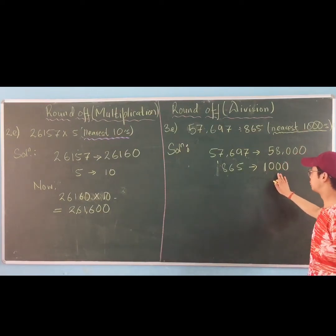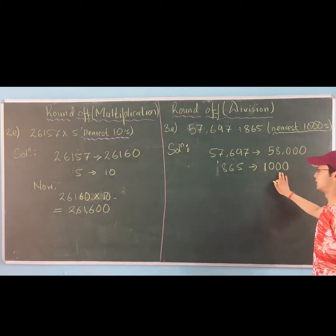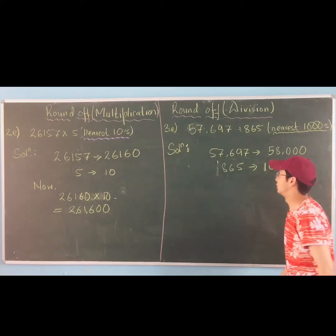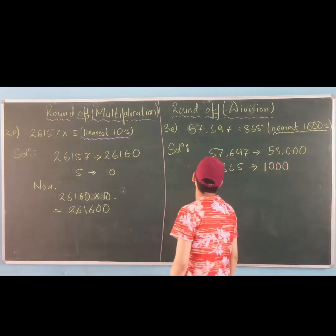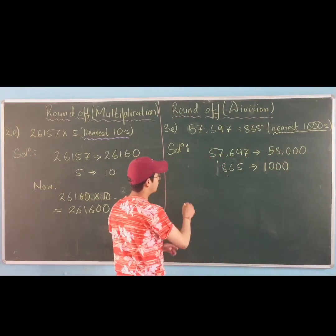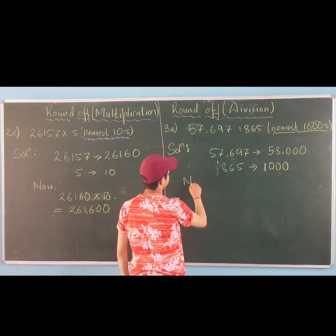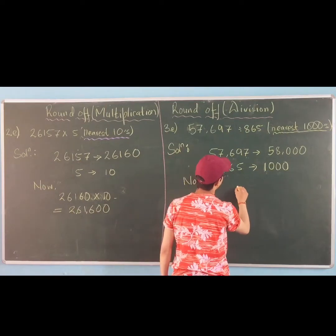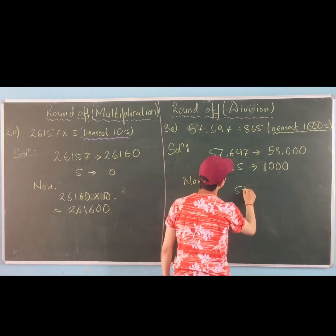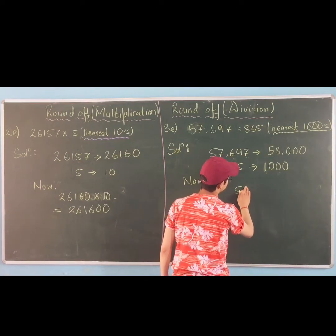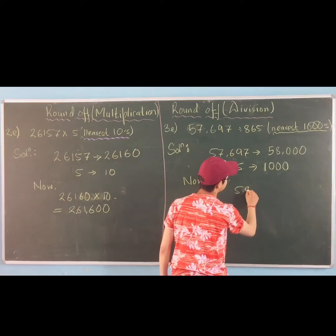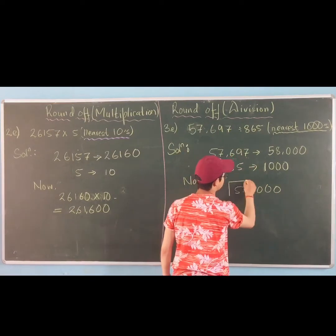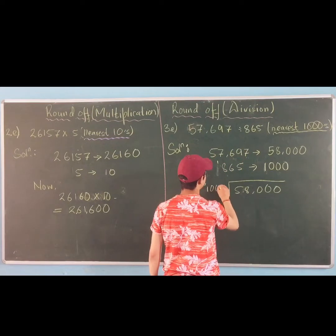So this number changes to 58000, because we are rounding out to the nearest thousand. Now you just have to divide it. So you divide 578000 by 1000.